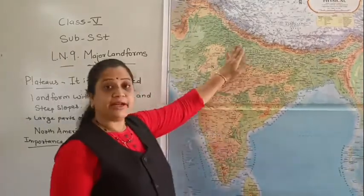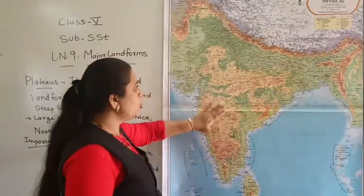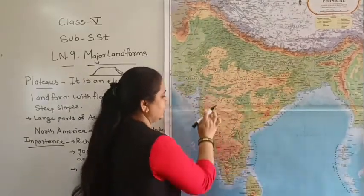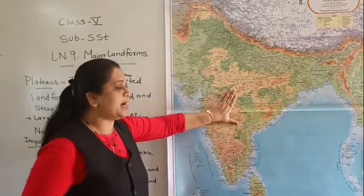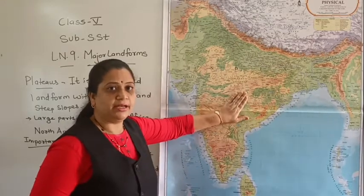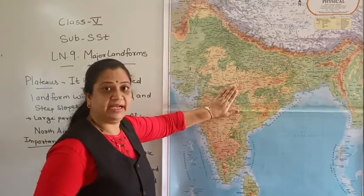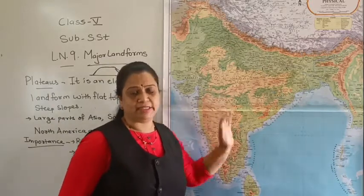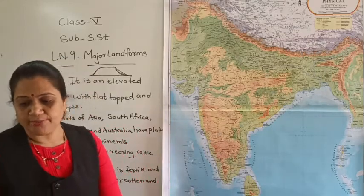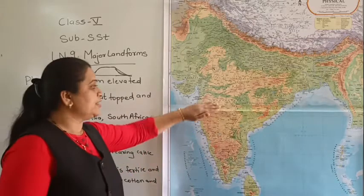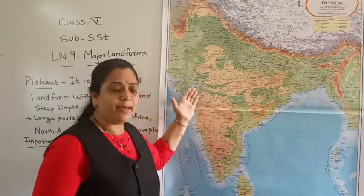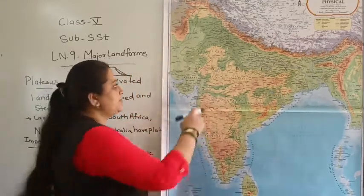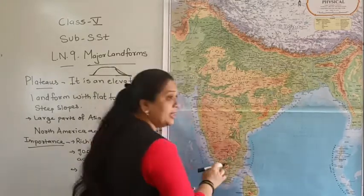When we refer to our physical map of India, most of the southern part of India is covered with the Peninsular Plateau. Most of the continents have a plateau region and the surface of the plateau is cut by rivers. Many rivers flow through the plateau region. In 4th standard we studied that the Deccan Plateau is in a triangular shape.